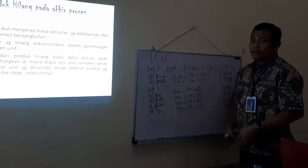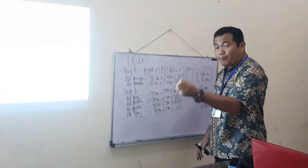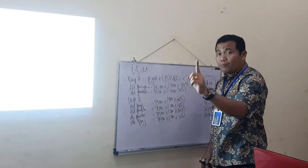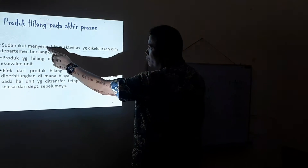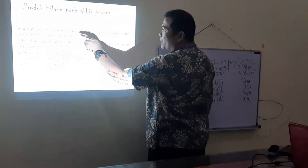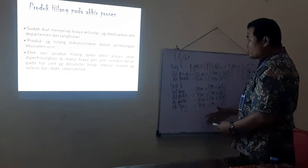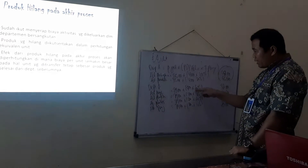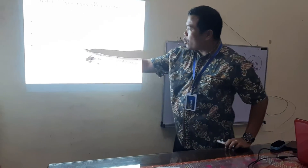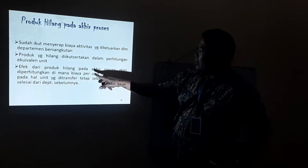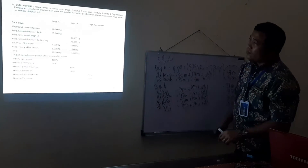Sekarang bagaimana kalau hilang di akhir. Tadi sudah dibahas hilang di awal — di Departemen B yang menjadi masalah adalah harga pokok per unit yang diterima semakin besar. Kalau hilang di akhir: produk sudah ikut menyerap biaya aktivitas yang dikeluarkan departemen. Produk yang hilang di akhir diperhitungkan dalam equivalent unit, berbeda dengan hilang di awal. Efeknya: biaya per unit akan semakin besar.